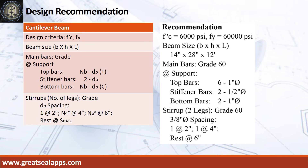Design recommendation: FC' equals 6,000 psi, FY equals 60,000 psi, beam size is 14 inches by 28 inches by 12 feet. Main bars of grade 60 — at support, top bars: 6 pieces of 1 inch diameter bar; stiffener bars: 2 pieces of 1.5 inch diameter bar; bottom bars: 2 pieces of 1 inch diameter bar. Stirrup of 2 legs, grade 60, 3/8 inch diameter bar, spacing: 1 at 2 inches, 1 at 4 inches, rest at 6 inches.